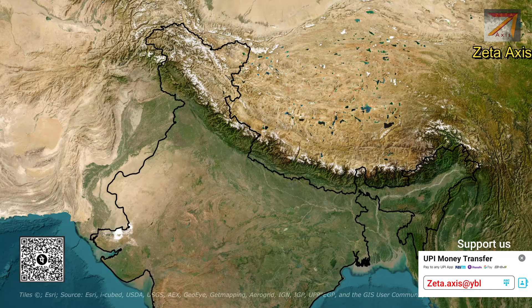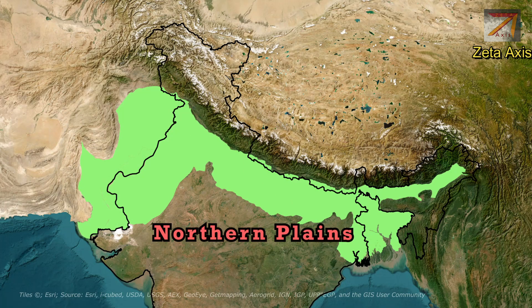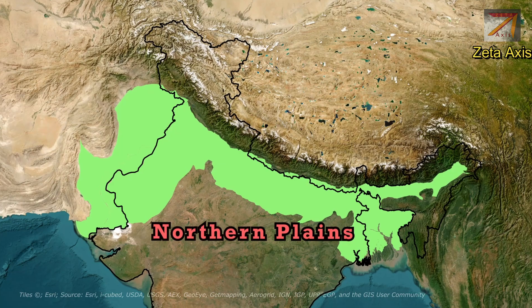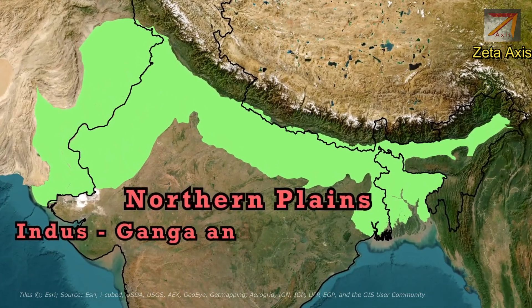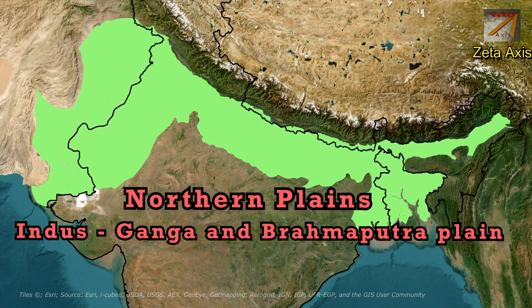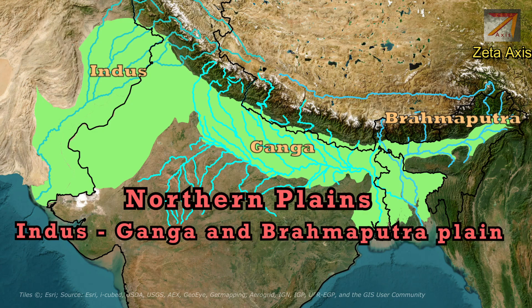Hello friends, welcome to Zita Access. Today we are going to discuss the different divisions of the Northern Plains based on region. The Northern Plains is also called the Indo-Gangetic-Brahmaputra Plains because the plain was formed by alluvial deposits from three rivers — the Indus, Ganga, and Brahmaputra, along with their tributaries.